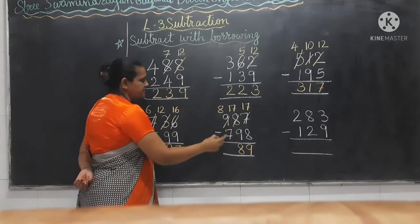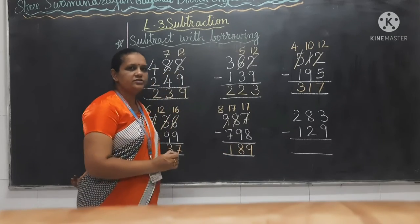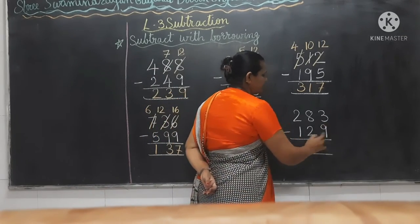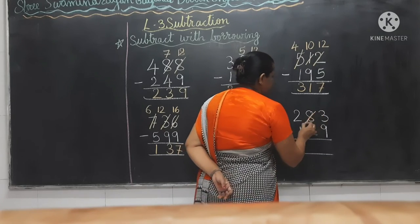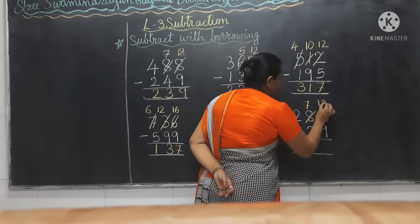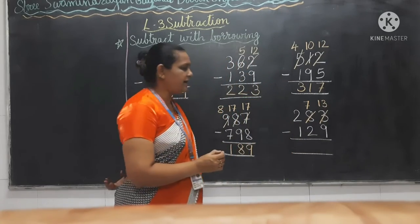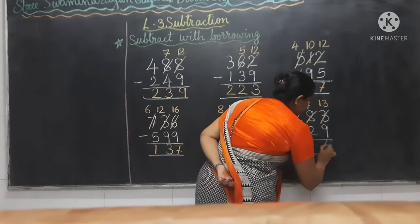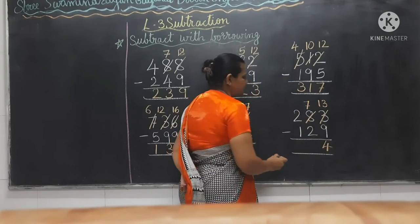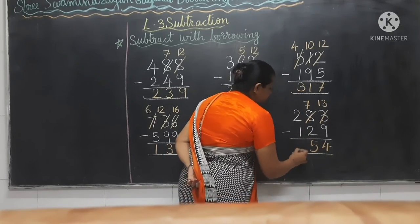Now 8 minus 7 is 1. Now 3 minus 9 — so again we borrow from 8. Now it becomes 13 — 13 minus 9 is 4. 7 minus 2 is 5; 2 minus 1 is 1.